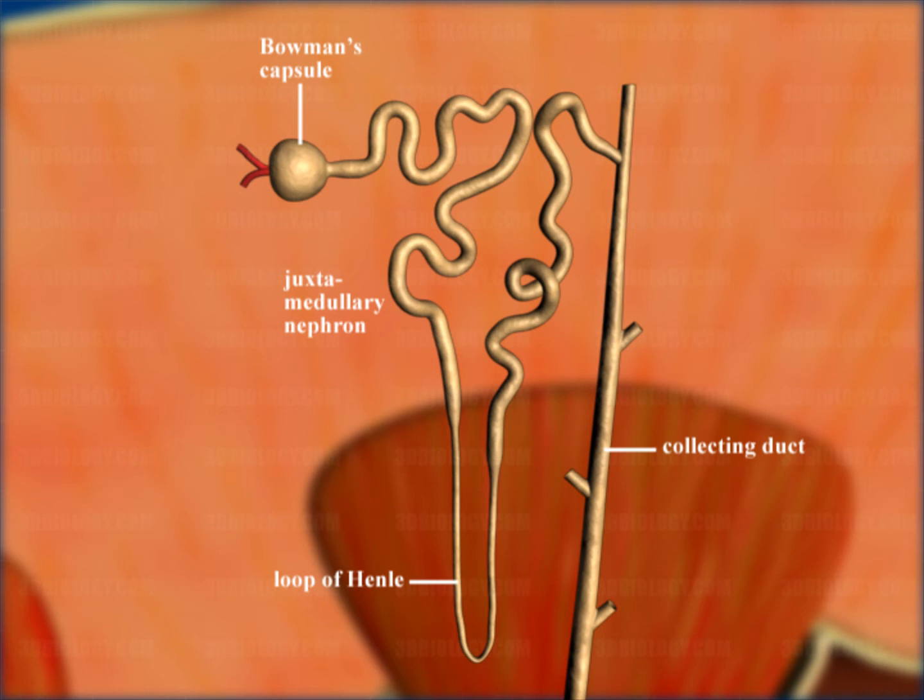The collecting duct is where many nephrons drain into, and it is located in the medulla of the kidney. Many collecting ducts drain into the renal pelvis, which then drains into the ureter.